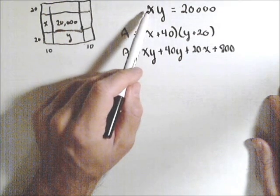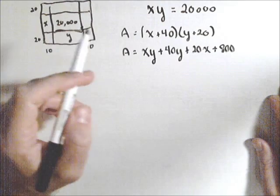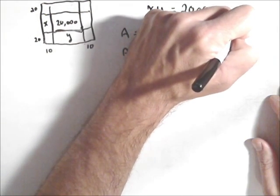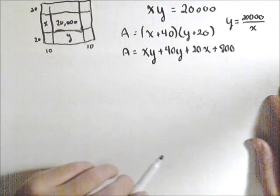What I need to do is solve this equation for one of my variables, my constraint. Let's solve it for y, so we know y equals 20,000 over x.